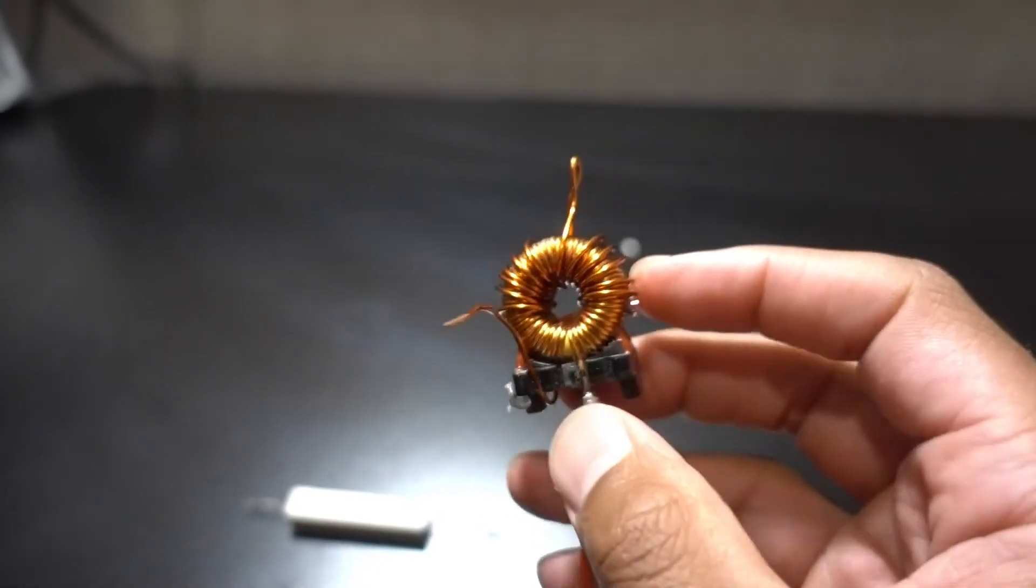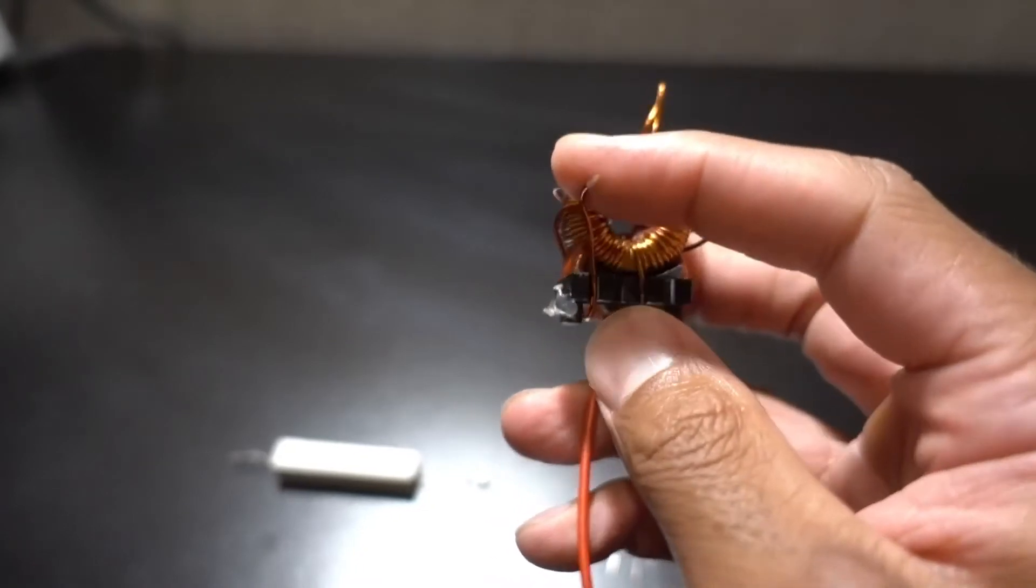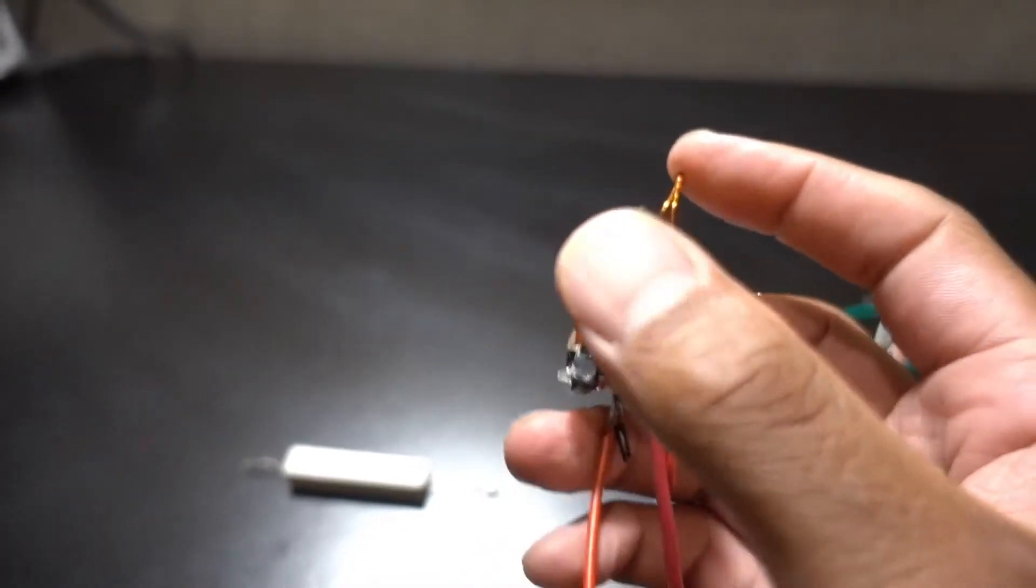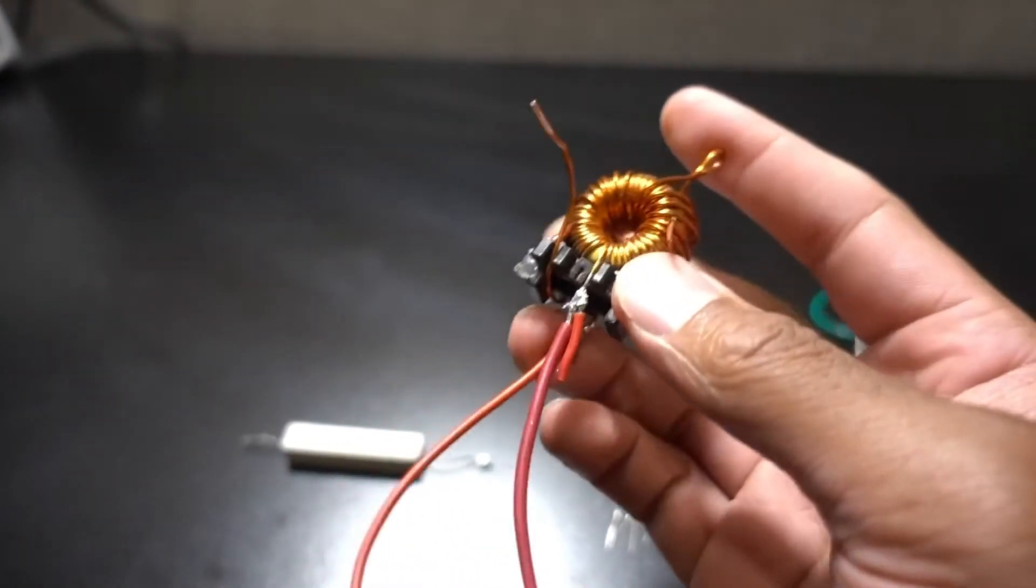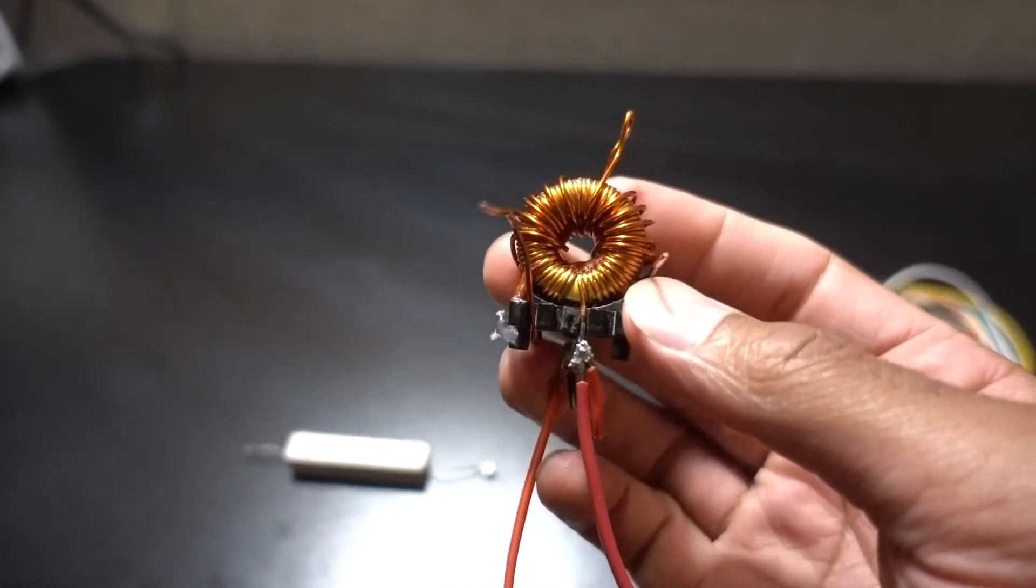This will act as my transformer. I used five turns on both sides. And this is going to be the center tap coil. And the secondary coil has about 70 turns.